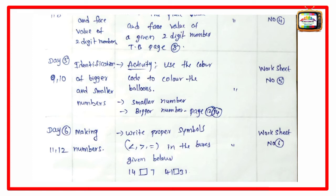Day 5, periods 9-10, identification of bigger and smaller numbers. Activity: use the color code to color the balloons, smaller number, bigger number. Page number 13, 14, then group activity worksheet number 5, then individual work.